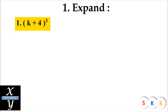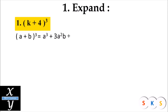k plus 4 the whole cube. This question is in the form of a plus b the whole cube, and we know that a plus b the whole cube equals a raised to 3 plus 3a squared b plus 3ab squared plus b raised to 3.